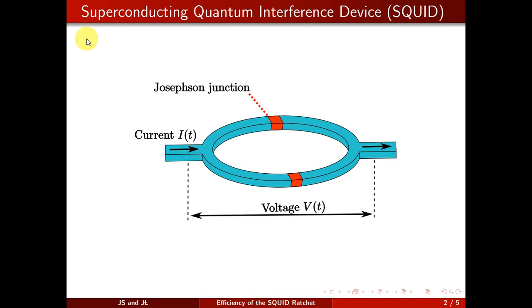A SQUID, a superconducting quantum interference device, is one of the most important instruments found in the majority of research laboratories worldwide.